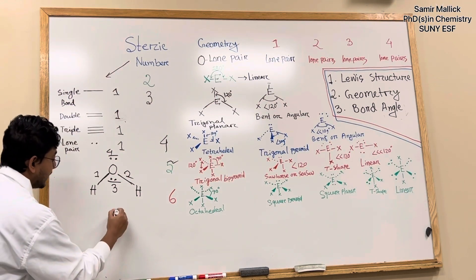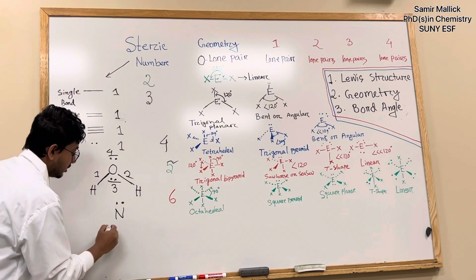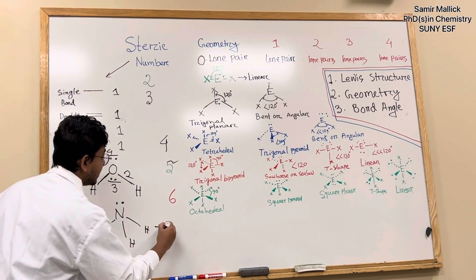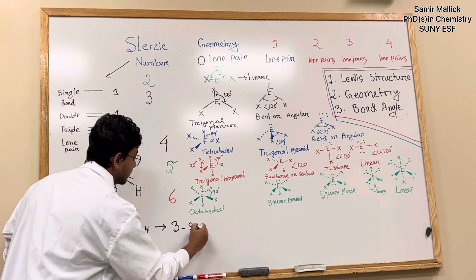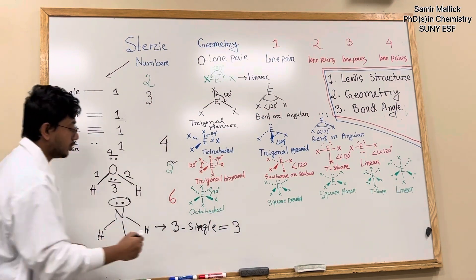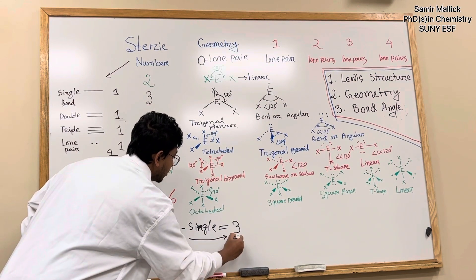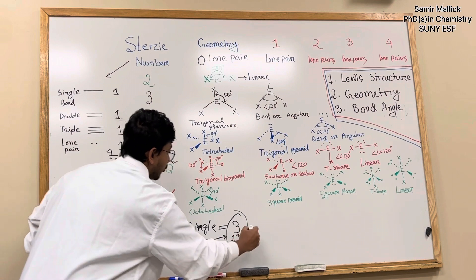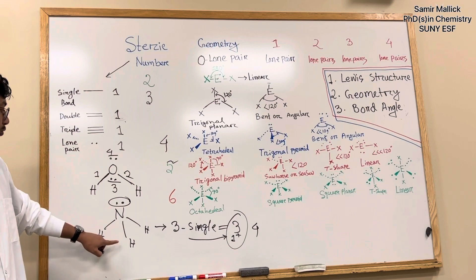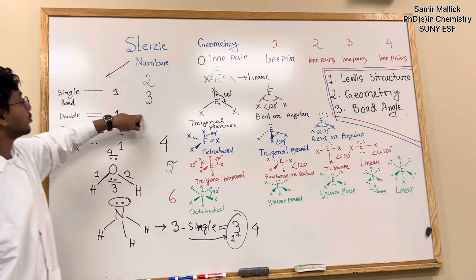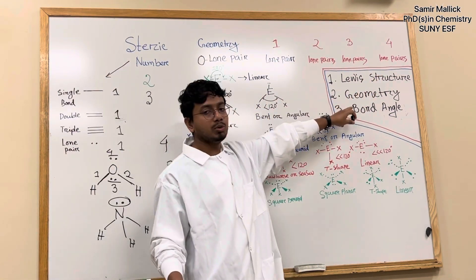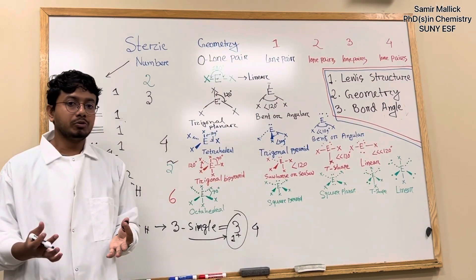For any compound like ammonia, you can see that structure. Ammonia has three single bonds, which count as three, and one lone pair, which counts as one. So ammonia also has a steric number of four. When we count four or any steric number, we can determine the Lewis structure, geometry, and bond angle of any compound.